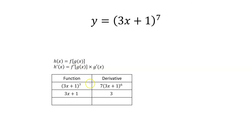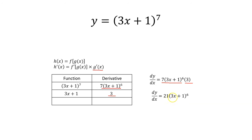So f prime of g of x would be this times g prime of x, which would just be 3. So the derivative of y, dy over dx, is equal to f prime of g of x times g prime of x. And you can simplify this to 21 times the quantity of 3x plus 1 raised to the 6th power. So that's the chain rule — just keeping track of all your derivatives and understanding: take the derivative of the outside, leave the inside alone, and multiply it by the derivative of the inside. This is a compound function that can go quite a few layers deep.